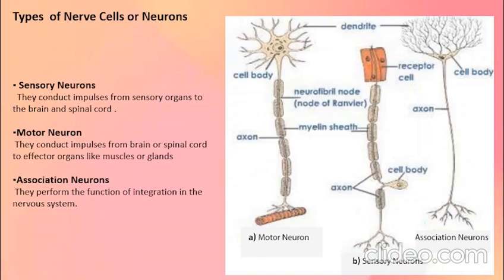According to their function, nerve cells are classified into three types. First are sensory neurons, which conduct impulses from sensory organs to the brain and spinal cord. Second are motor neurons, which conduct impulses from the brain or spinal cord to effector organs like muscles or glands. Third are association neurons, which perform the function of integration in the nervous system.